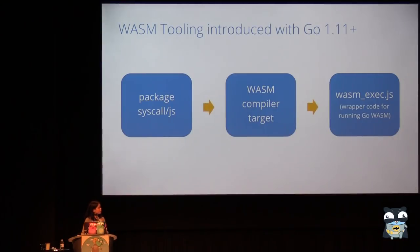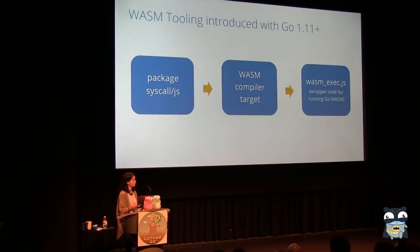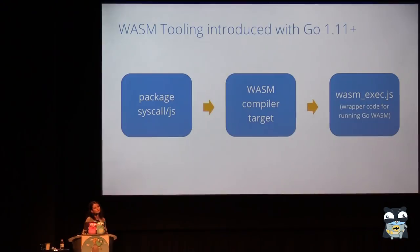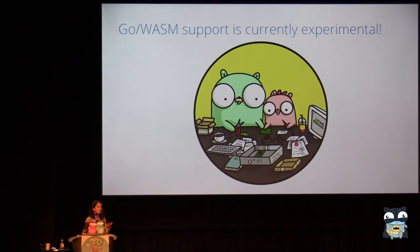The tooling introduced with Go 1.11 includes a new syscall/js library that helps us write Go code that is meant to interface with JavaScript environments. It also includes a compiler target so we can compile our Go into WebAssembly. And finally, it includes some wrapper functionality accessible as a JavaScript file to help glue our Go compiled into WASM and our JavaScript environment together. I just want to provide a disclaimer that Go WASM support is still considered experimental, meaning you can expect to see a lot of changes — including potentially breaking changes — in upcoming Go releases.